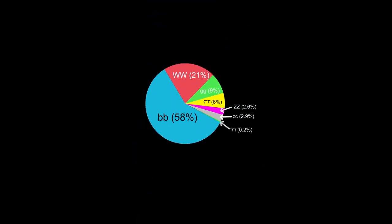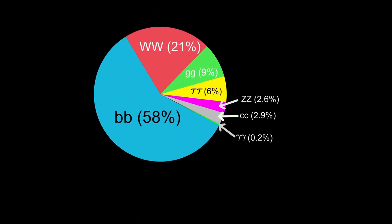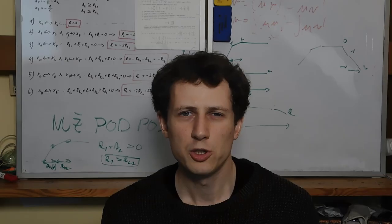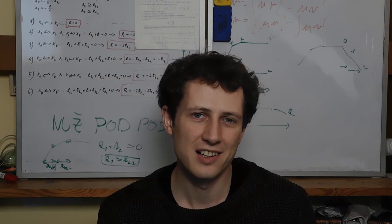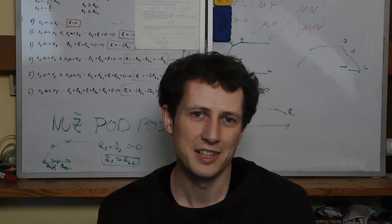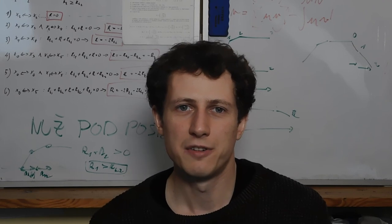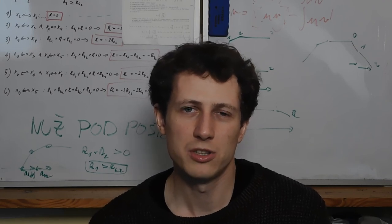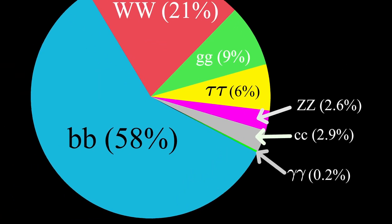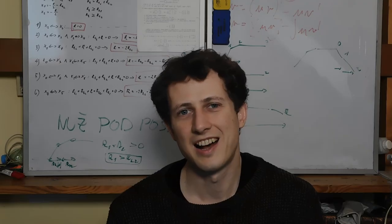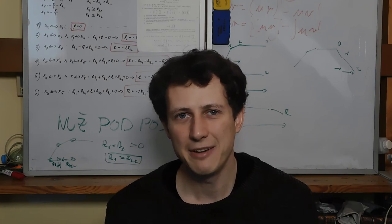So let's consider this decay channel of Higgs to two photons. Even though the probability the Higgs decaying into two photons is just 0.2%, photons are so easy to detect that it was in fact this channel that led to the discovery of the Higgs boson in 2012. The discovery of Higgs decaying into two bottom quarks happened after 5 years, even though it's the dominant decaying channel. Hadrons are hard, as I said.